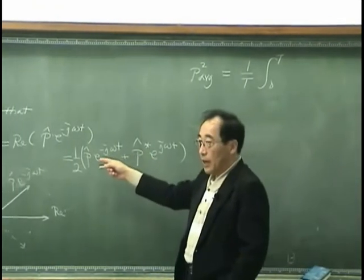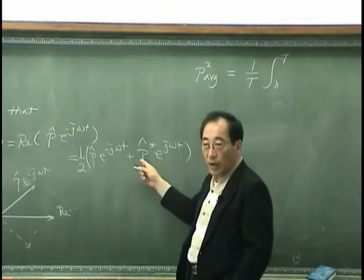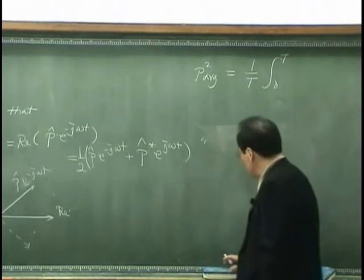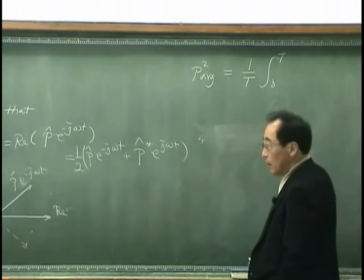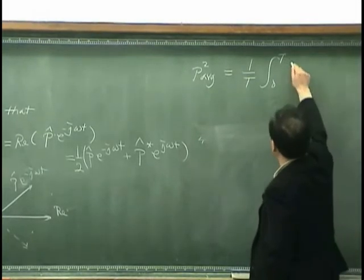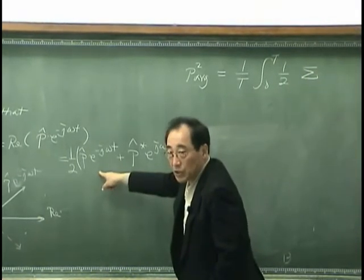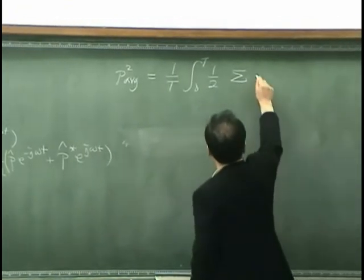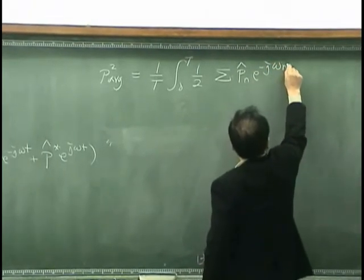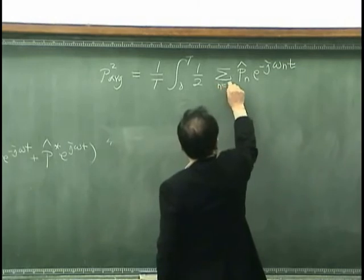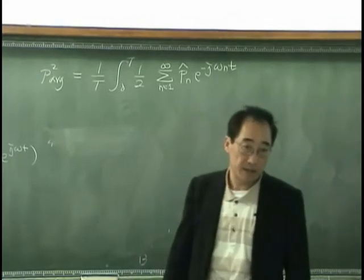Suppose I have a frequency omega-1, omega-2, omega-3, omega-4, omega-n. Then, instead of writing just p exponential j omega t, I can write this is one-half, this is p hat n exponential minus j omega nt, and say n equal 1 to infinity, or capital N.